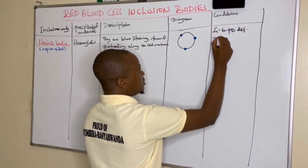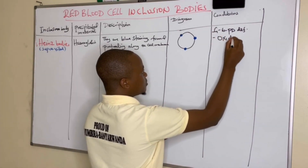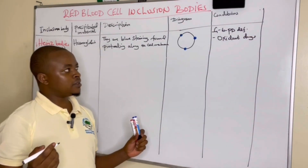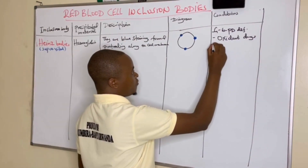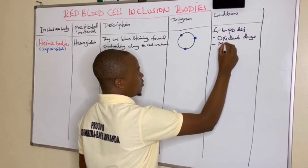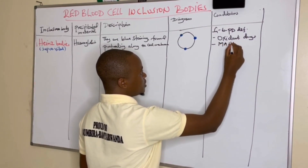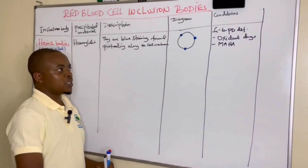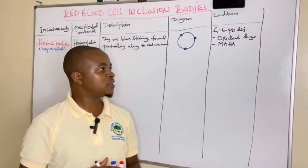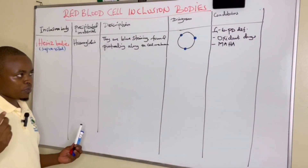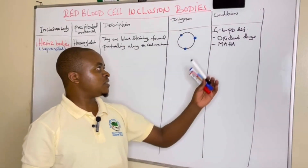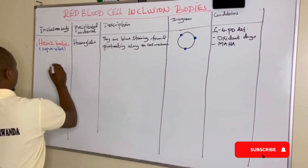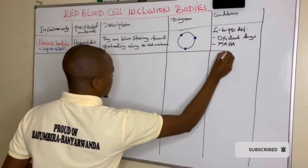We also find Heinz bodies with oxidant drugs — drugs like sulfonamides can lead to this — and we can also find them in MAHA, which stands for microangiopathic hemolytic anemia. So the major conditions are: oxidant drugs like sulfonamides, G6PD deficiency, and microangiopathic hemolytic anemia.